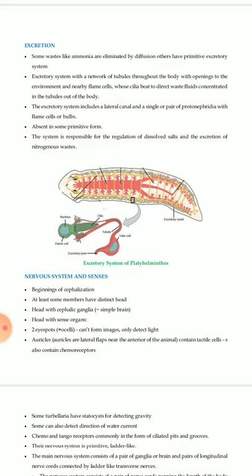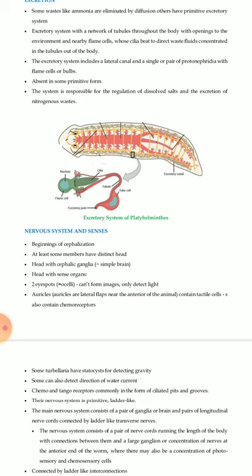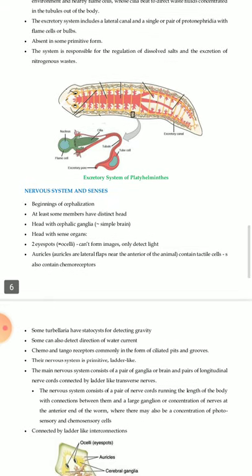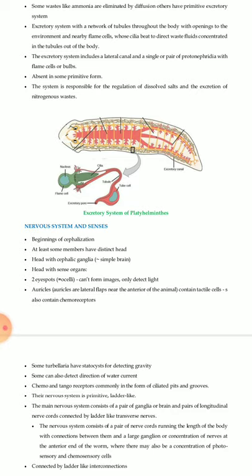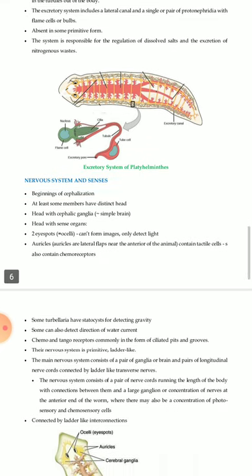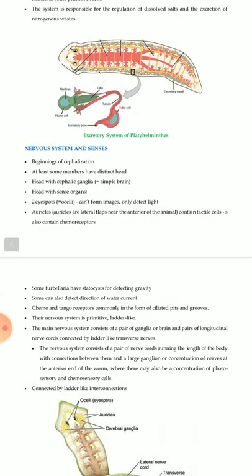Excretion: some waste like ammonia is eliminated by diffusion; others have a primitive excretory system — a network of tubules throughout the body with openings to the environment and nearby flame cells, whose beating cilia direct waste fluids out of the body. The excretory system includes a lateral canal and a single or paired protonephridia with flame cells or bulbs, absent in some primitive forms. This system regulates dissolved salts and excretes nitrogenous waste.